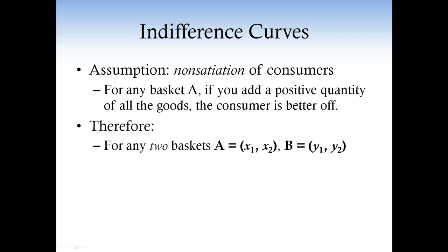In other words, for any two baskets with the same goods 1 and 2, A equal x1, x2, and B equal y1, y2, with y1 bigger than x1 and y2 bigger than x2, we have that the utility of y1, y2 is bigger than the utility of x1, x2. That is, the utility of B is bigger than the utility of A. So B is preferred to A because it has more of both goods.